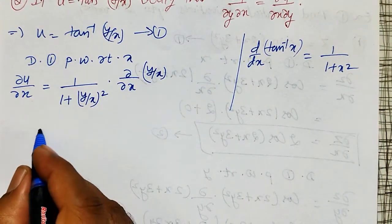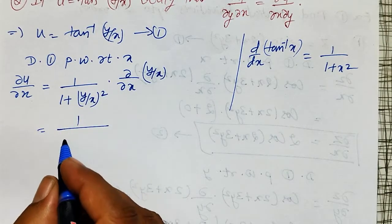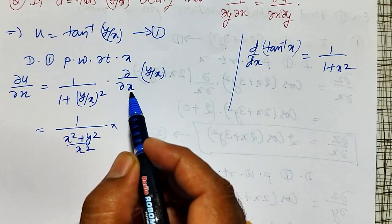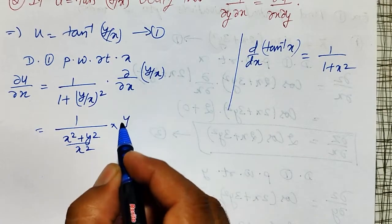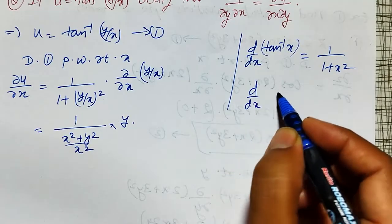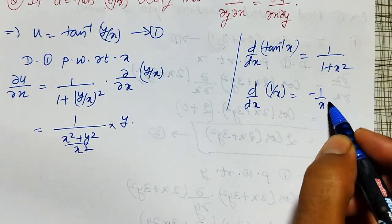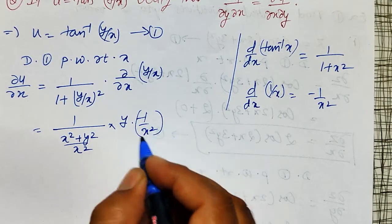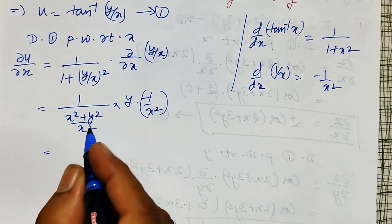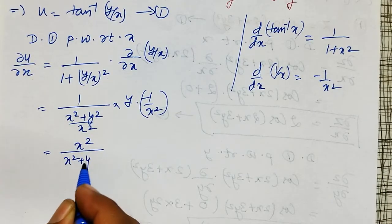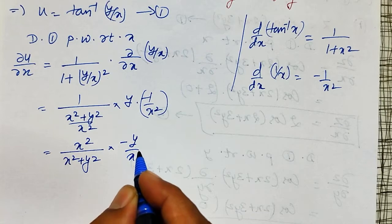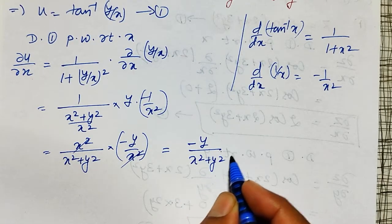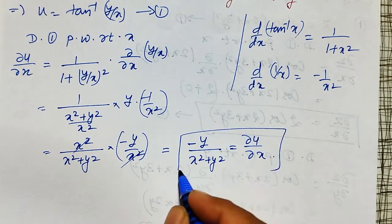Taking LCM, I simplify 1/(1 + (y/x)²) to x²/(x² + y²). Now I need the partial derivative of y/x with respect to x: since y is constant, ∂/∂x(y/x) = y · (−1/x²) = −y/x². Multiplying, the x² cancels, giving ∂u/∂x = −y/(x² + y²). This is equation number two.